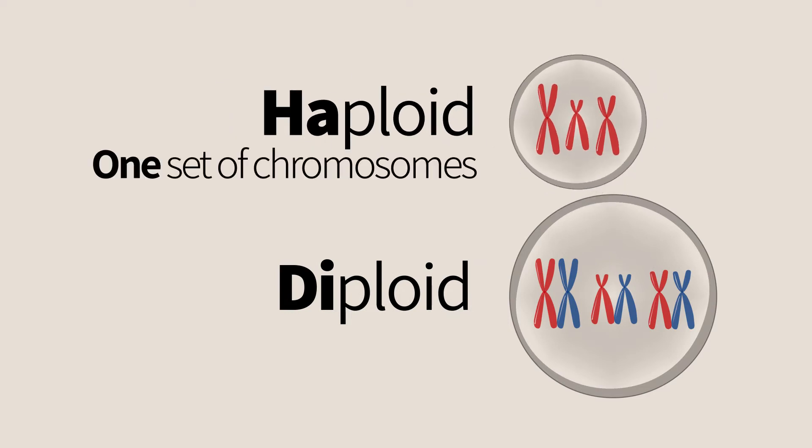A haploid cell has one set of chromosomes and a diploid cell has two sets, one from each parent.